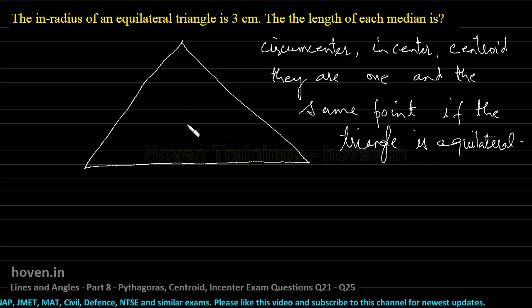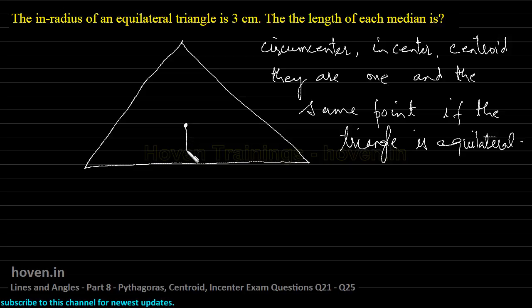So if this point is that point where circumcenter also lies, incenter also lies, centroid also lies, then this point is also the incenter. So we can say that this height has been given to us as 3 cm.